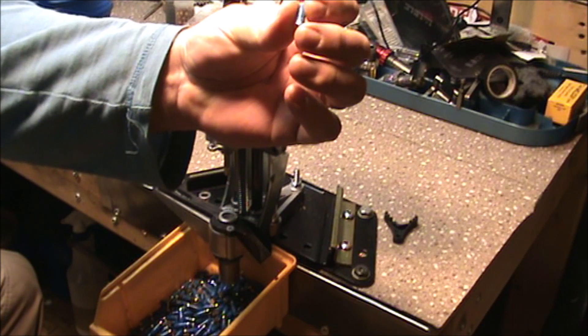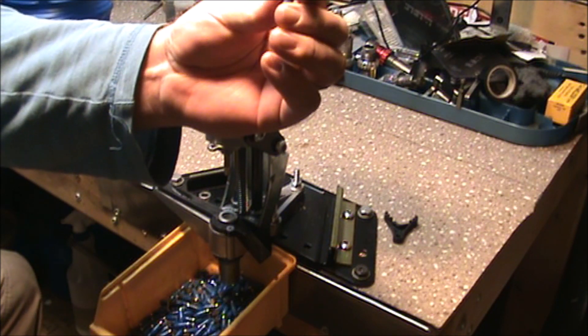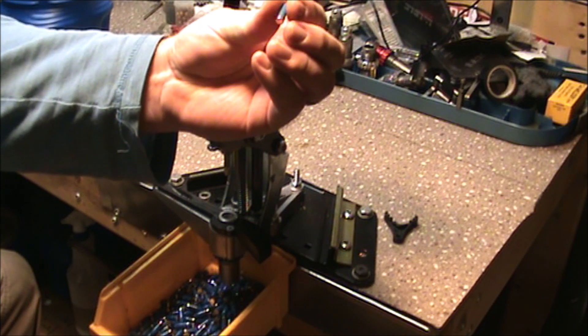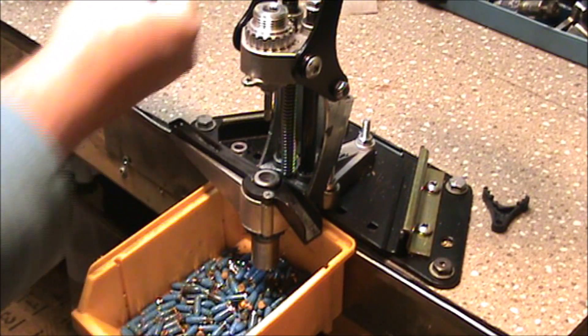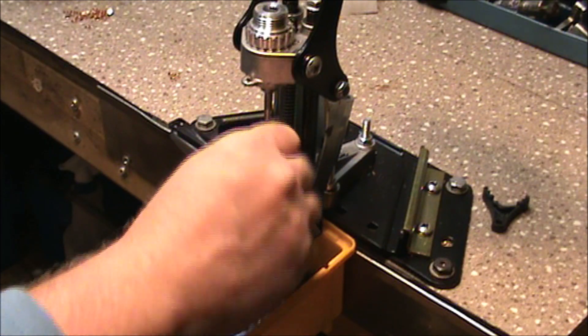And they turn out pretty good. Little 55 grain gas check Lee .224 bullet, ready to load up, take to the range and test. Hardest part is getting these little small gas checks on here.